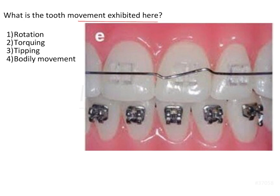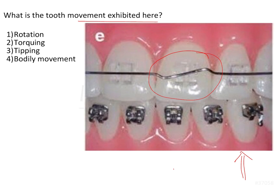What is the tooth movement being exhibited in this image? What we see is that there is a bend given in the wire, and the question is what tooth movement is going to be expressed by this bend. The various types of bends given in the wire were initially used during the standard edgewise technique, which did not have any bracket prescription. So all the tip and torque values seen in the natural dentition had to be incorporated into the wires by giving bends, which were then expressed onto the tooth.